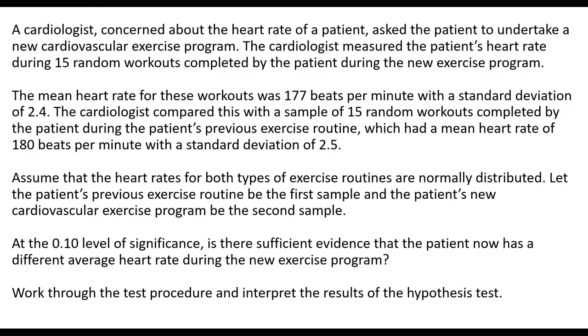Let's go ahead and start. A cardiologist, concerned about the heart rate of a patient, asked the patient to undertake a new cardiovascular exercise program. The cardiologist measured the patient's heart rate during 15 random workouts completed by the patient during the new exercise program. The mean heart rate for these workouts was 177 beats per minute with a standard deviation of 2.4. The cardiologist compared this with a sample of 15 random workouts completed by the patient during the patient's previous exercise routine, which had a mean heart rate of 180 beats per minute with a standard deviation of 2.5.